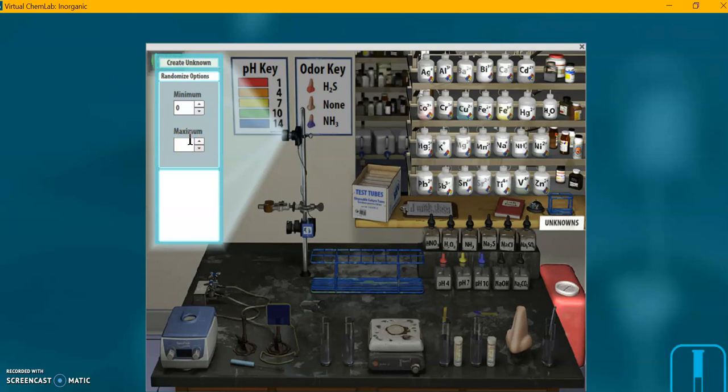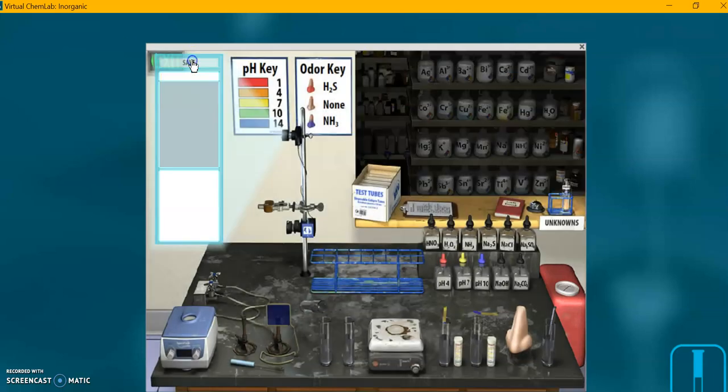And the worksheet also says to change these to a minimum of zero, maximum of four, meaning that our practice unknown will have up to four, all four of those ions. Or none of them could just be water. Or one, two, or three.